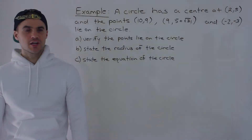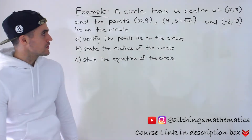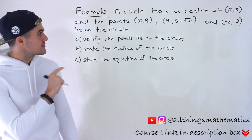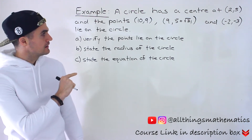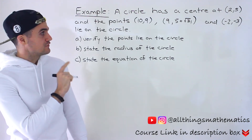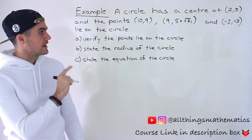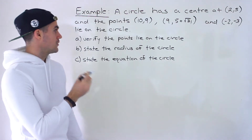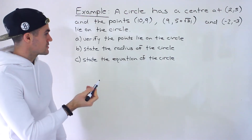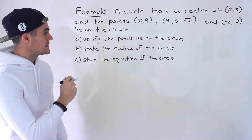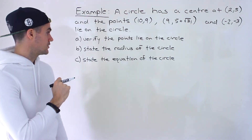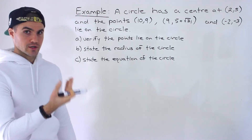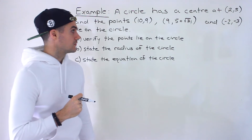Welcome back everyone, Patrick here. Moving on to another question dealing with circles. We're told that a circle has a center at (2, 5) and the points (10, 9), (9, 5+√31), and (-2, -3) lie on the circle. In part A we have to verify the points lie on the circle, in part B state the radius, and in part C state the equation of the circle.